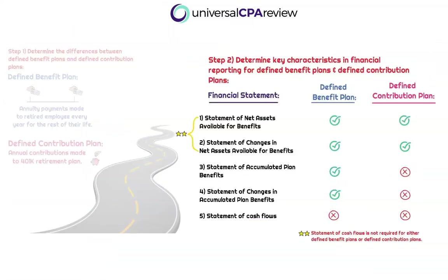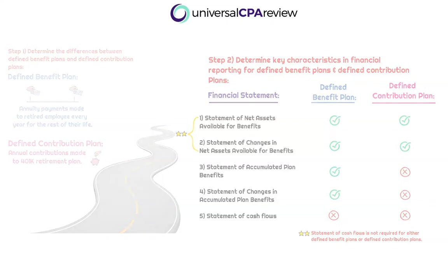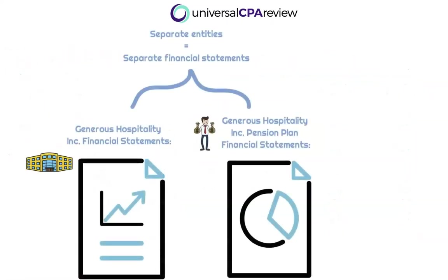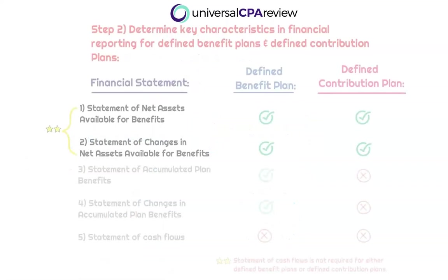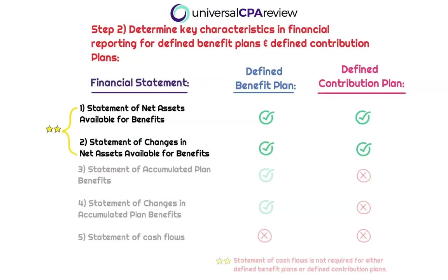Now let's dive into the meat and potatoes of this module — what the exam is going to focus on primarily. This is step two in our mental map. The pension plan is an entity in itself, separate from the company's financial statements. We have Generous Hospitality's financial statements, and then we have the pension plan financial statements — they're separate. At the end of the day, there are two financial statements required for both defined benefit plans and defined contribution plans. The two financial statements are going to sound very similar: the statement of net assets available for benefits, and the statement of changes in net assets available for benefits.